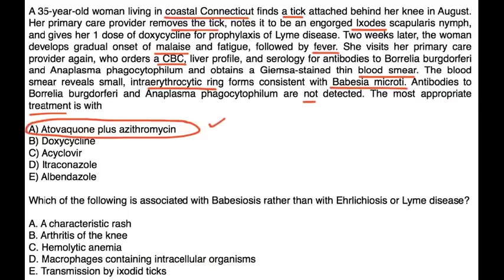Which of the following is associated with Babesiosis rather than Ehrlichiosis or Lyme disease? The distinguishing factor is that Babesiosis involves the rupture of RBCs, which can lead to hemolytic anemia. The answer is C.